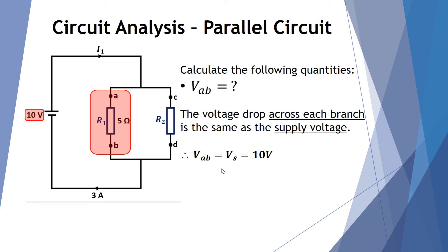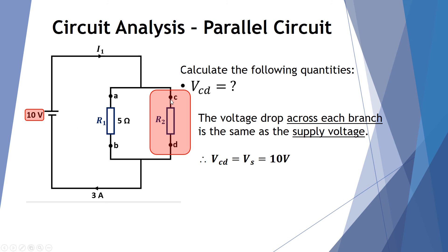Using our basic knowledge of parallel circuits — when there's no other resistance in the circuit — we know this 10 volt supply will be equal to the potential difference across each of the branches, between A and B and between C and D. So the voltage between points A and B equals the supply voltage, which is 10 volts. Likewise, in the other branch, the voltage between points C and D also equals 10 volts.